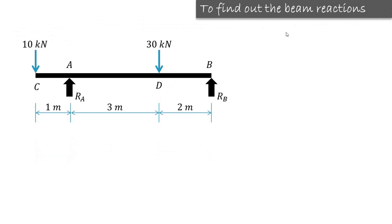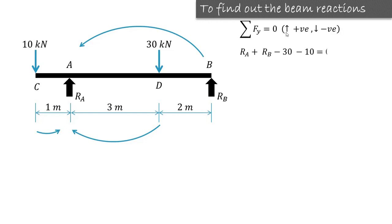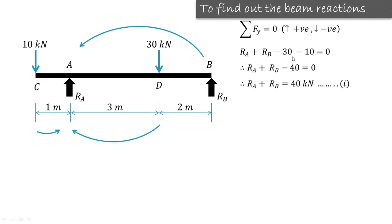Now we'll see how to find out the beam reactions. The first condition of equilibrium is summation of forces in the y-direction is equal to 0. Upward forces are positive and downward forces are negative. Ra and Rb are both acting upward, so they are positive. The point loads of 10 kilonewton and 30 kilonewton act downward, so they are negative. Therefore Ra plus Rb minus 30 minus 10 equals 0, giving us Ra plus Rb equals 40 kilonewton.